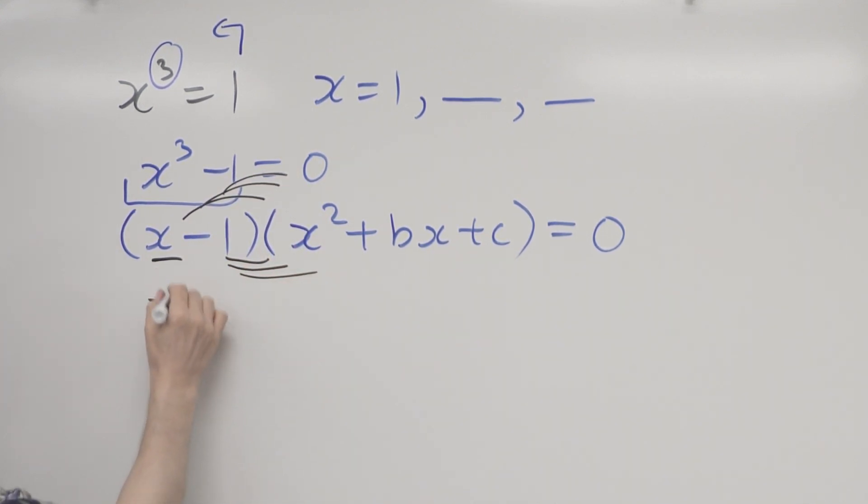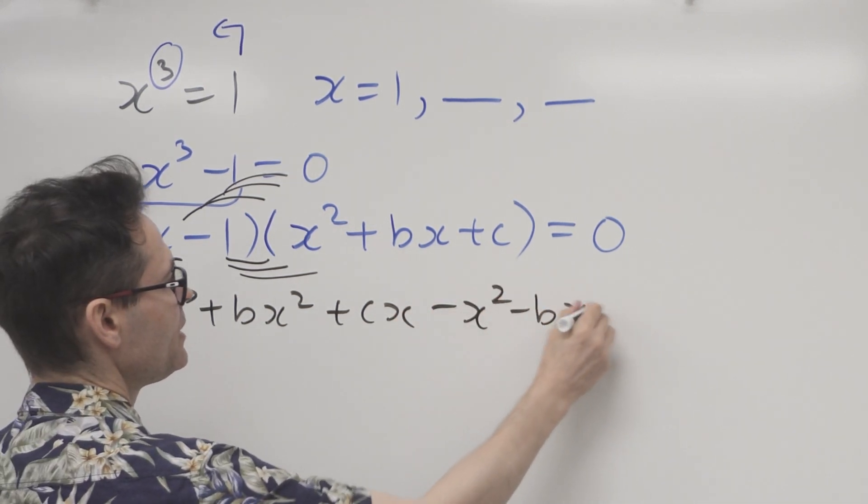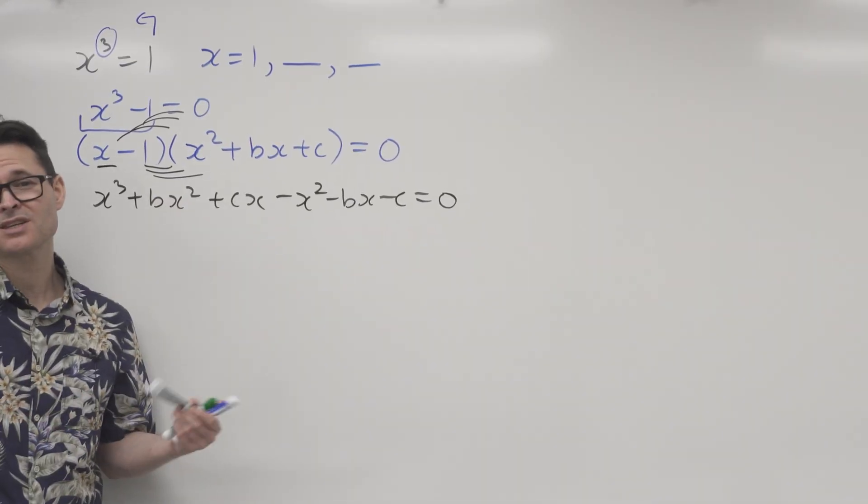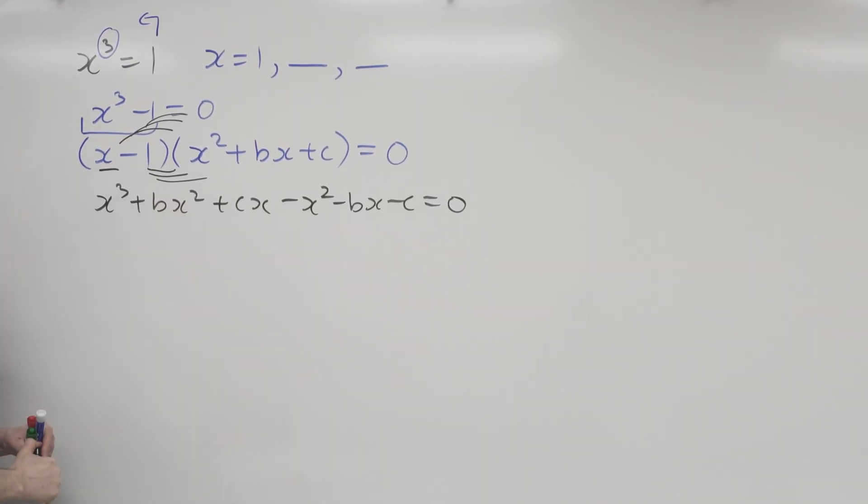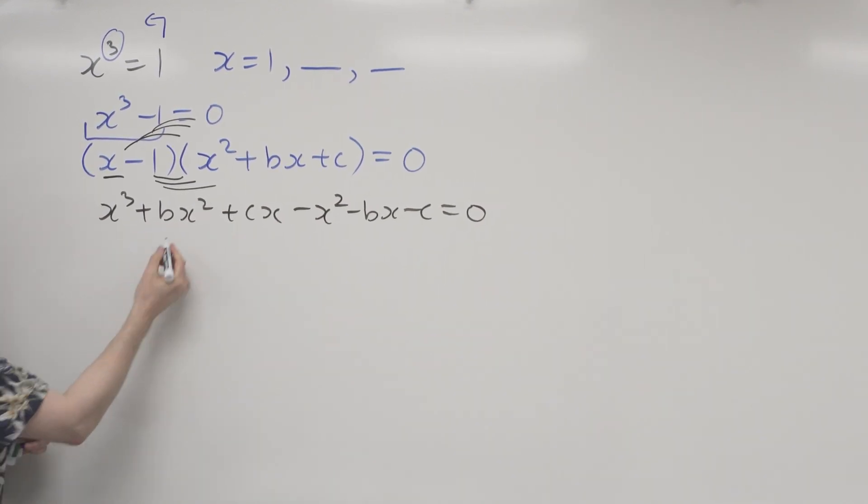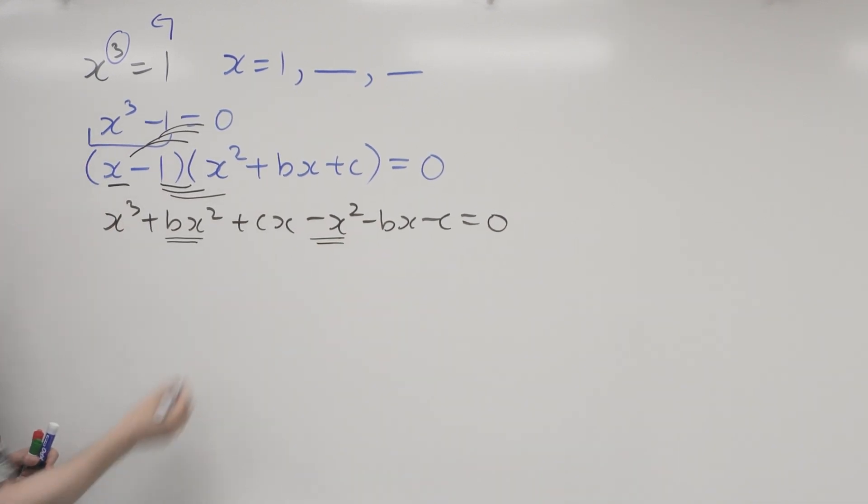So that's going to give me x cubed plus bx squared plus cx and now bring the negative one through it's going to change all the signs. We're having a lot of fun here. It's pretty easy so far. Most high school students can do this. And then what I'm going to do is I'm going to equate the exponents. Before I do that, I'm going to group my like terms. So this square term can go with this square term. And this linear term can be grouped with this linear term.